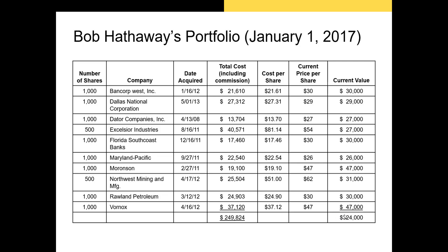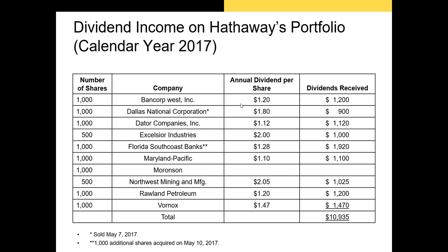Assuming no dividends, our portfolio return is just $324,000 minus $250,000 divided by $250,000. But if we have dividends, this changes things. For many of these stocks, we have an annual dividend per share and a certain number of shares. For Bancorp West, we have 1,000 shares with a $1.20 dividend, giving total dividends of $1,200 over the period. We need to take into account the total dividends from our portfolio in our formula.